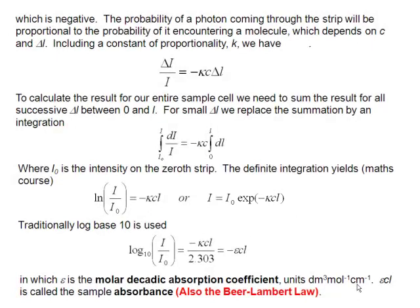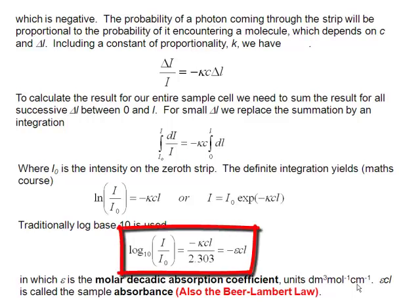The traditional way to assess the logarithm of I over I₀ is to use logs to the base 10. So we write that as log₁₀, and that means on the right-hand side we have to make a correction, dividing by 2.303. And so we include that 2.303 correction into our constant of proportionality, which was κ, and that now becomes ε. Epsilon is just κ divided by 2.303.